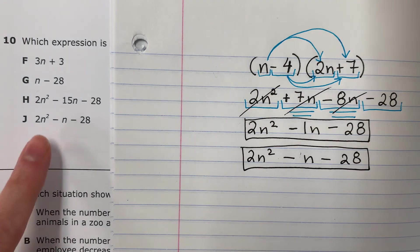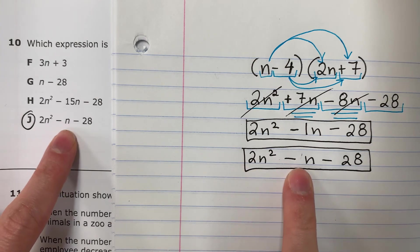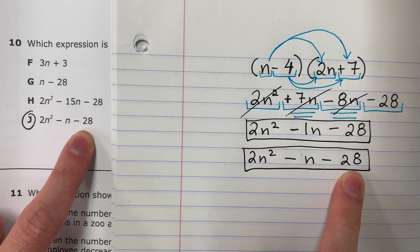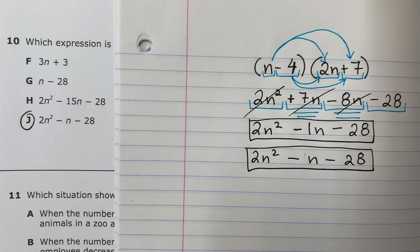Looks like my answer is J. 2n squared minus n minus 28. Thanks for watching. Please subscribe and leave a comment.